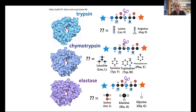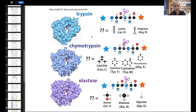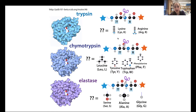Some common serine proteases are trypsin, chymotrypsin, and elastase. They have different substrate preferences — what they tend to cut next to. Trypsin likes to cut C-terminal to lysine or arginine, which are long and positively charged. Chymotrypsin likes to cut next to leucine, tyrosine, tryptophan, or phenylalanine, which are bulky and hydrophobic. Elastase prefers serine, alanine, or glycine, which are nice and small. This fits with the specificity of their site — the specificity pocket determines the substrate specificity.